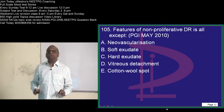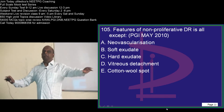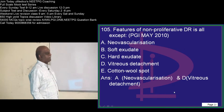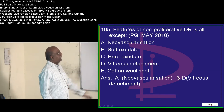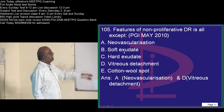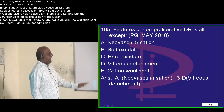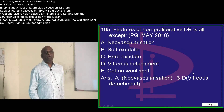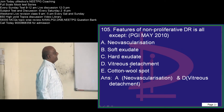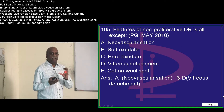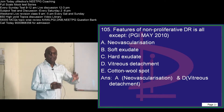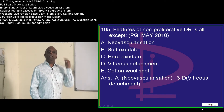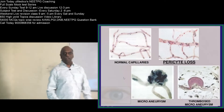What are the features of non-proliferative diabetic retinopathy versus proliferative diabetic retinopathy — this is a very important question. Soft exudates, hard exudates, and cotton wool spots can be part of the non-proliferative form. Whereas neovascularization, vitreous hemorrhage, and tractional retinal detachment are all features of the proliferative form of diabetic retinopathy.